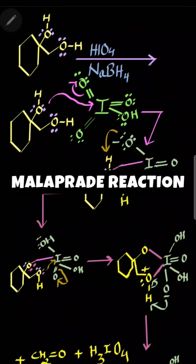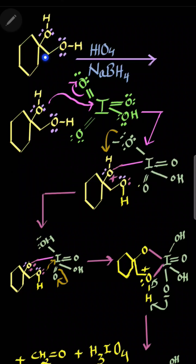Welcome back to the Tetrahedron Chemistry Classes. Today's question involves a vicinal diol. In the first step, it reacts with periodic acid, and then in the second step it reacts with sodium borohydride — meaning you will perform a reduction.